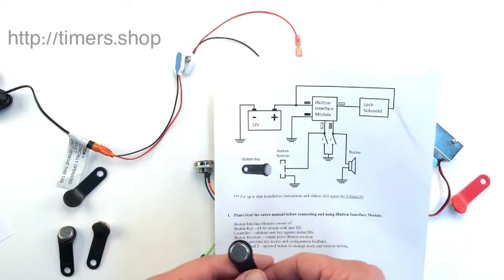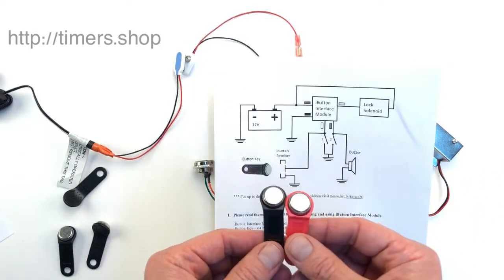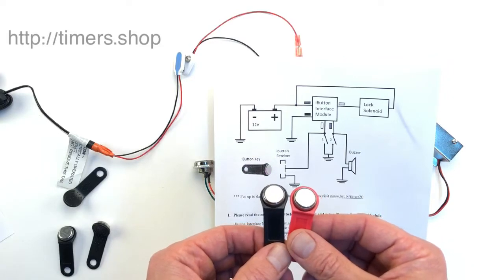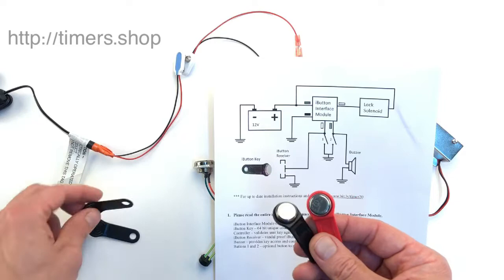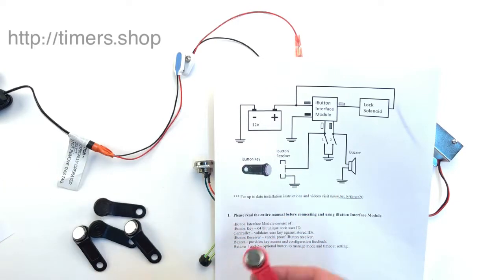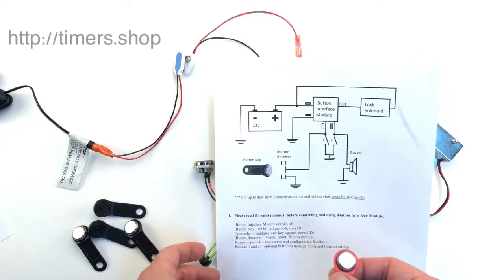The iButton keys are inexpensive and unique, each having a 64-bit electronic code. Since they're very cheap, you can buy a number of them.